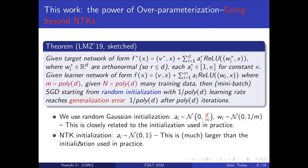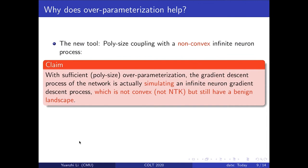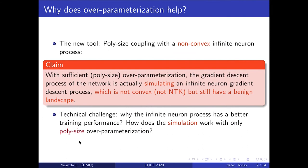The key tool we introduce is what we call a poly-sized coupling with the non-convex infinite neural process. With sufficient — meaning polynomial size — over-parameterization, the gradient descent of this over-parameterized network is actually simulating an infinite neural gradient descent process. This infinite neural process is not convex, so it is not a neural tangent kernel process, but it still has a benign landscape which allows us to analyze convergence. The technical challenge is understanding why the infinite neural process has better training performance, and how the simulation works with only poly-sized over-parameterization.